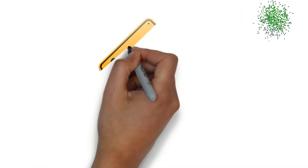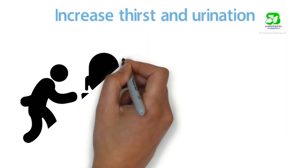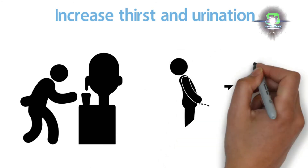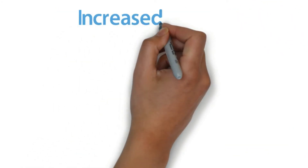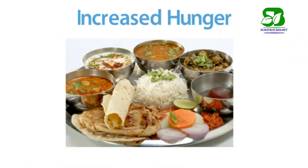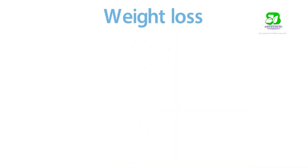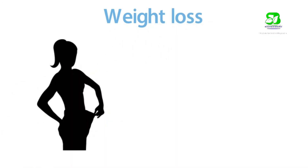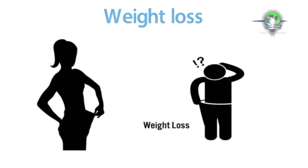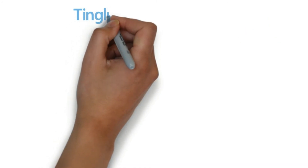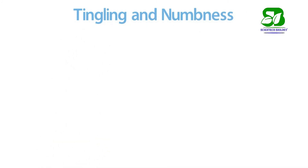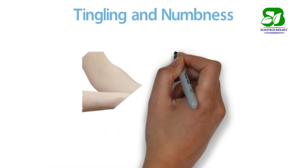The symptoms of diabetes are increased thirst and urination. Hunger sensation will increase. Fatigue occurs. Vision becomes blurred. Unexplained weight loss can be seen. Eating, tingling and numbness in the hands or feet also take place.